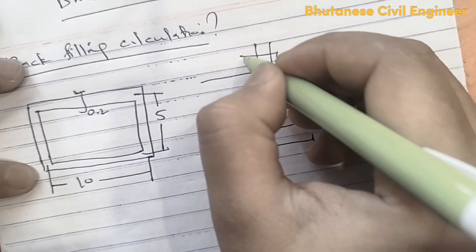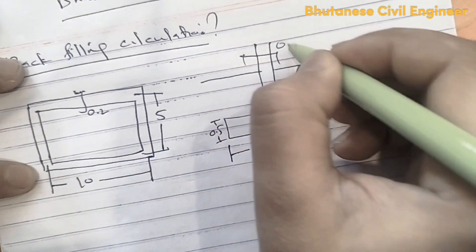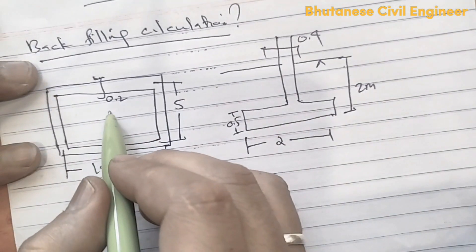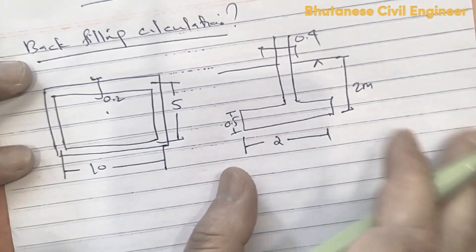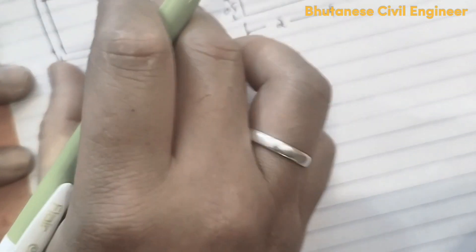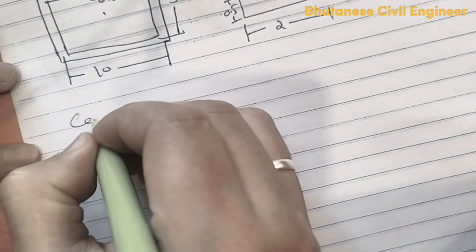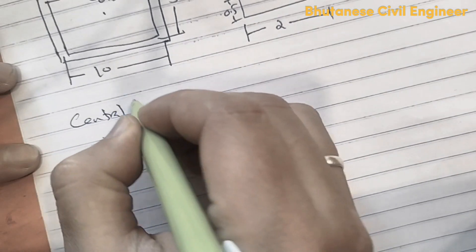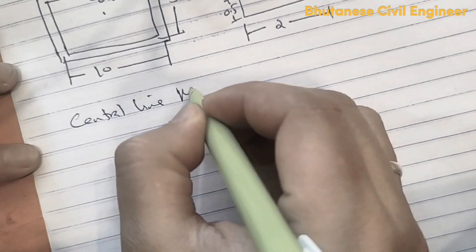The building plan has a 0.4 column and the wall is 0.2. We can see that the center line is simple — center line method.